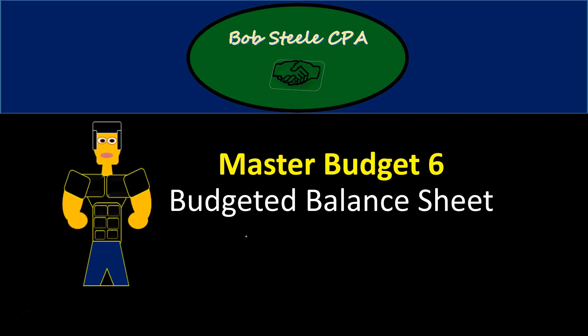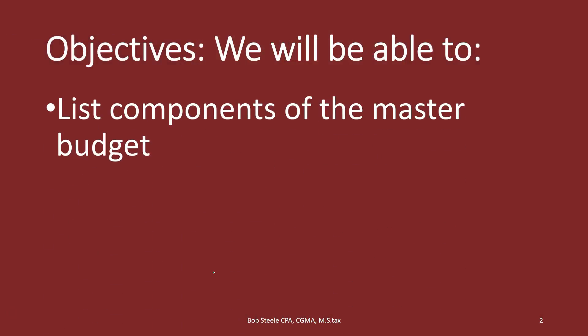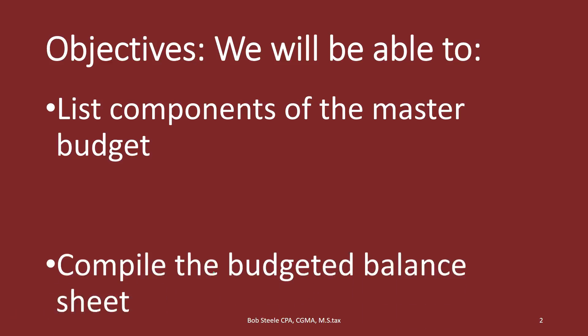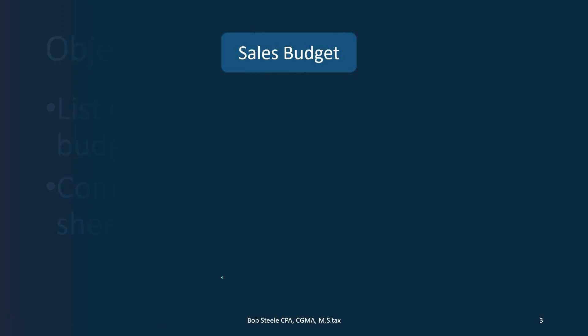Hello. In this lecture we're going to look at the Master Budget Part 6, Budgeted Balance Sheet. If you haven't taken a look at the other five, you might want to take a look at those first because we will be using components of those in order to compile the balance sheet. At the end of this, we will be able to list components of the master budget and compile the budgeted balance sheet.